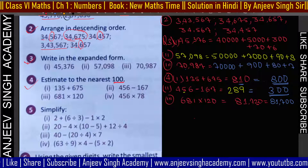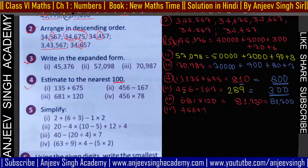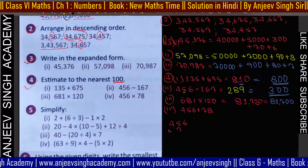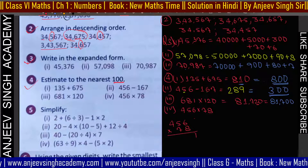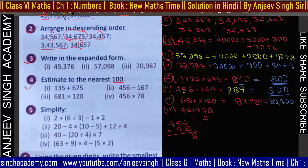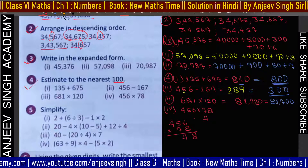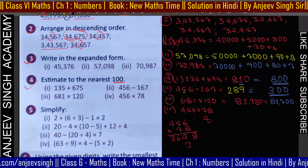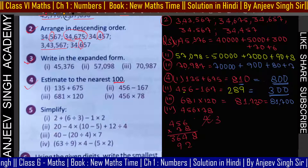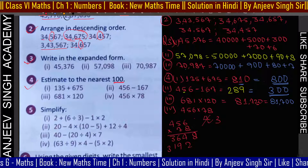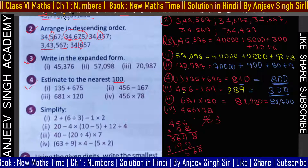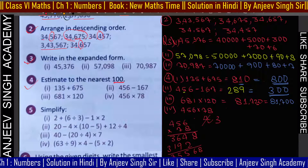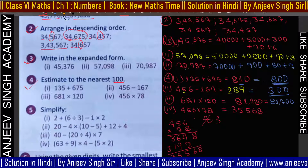Next question: 456 × 78। Multiply करते हैं: 8×6 = 48 carry 4, 8×5 = 40 plus 4 = 44 carry 4, 8×4 = 32 plus 4 = 36। फिर 7×6 = 42 carry 4, 7×5 = 35 plus 4 = 39 carry 3, 7×4 = 28 plus 3 = 31। Add करते हैं: 8, 4+2 = 6, 9+6 = 15 carry 1, 3+1 = 4 carry 1 — 34+5 = 35। तो आया 35,568।